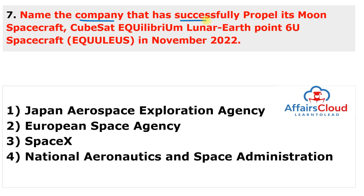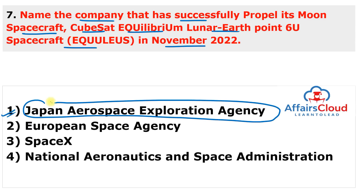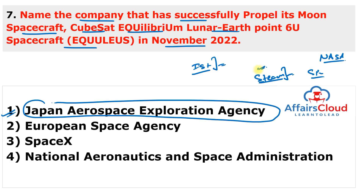Question 7: Which space company propelled its moon spacecraft named CubeSat Equilibrium Lunar Earth Point 6U in November 2022? The answer is JAXA, the Japan Aerospace Exploration Agency. JAXA successfully used steam (water) to propel its CubeSat ELEP-1 spacecraft, launched aboard NASA's Orion spacecraft. This is the world's first successful orbit control beyond low Earth orbit using a steam/water propulsion system.